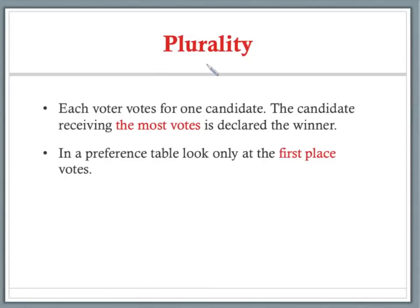The first type is plurality. In this type of voting, each voter votes for only one candidate, and the candidate receiving the most votes is declared the winner. If we're looking at a preference table, we would look only at the first place votes — whoever has the most first place votes is the winner.